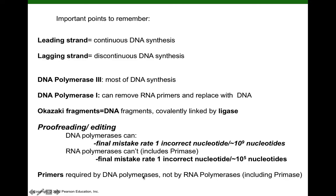I was reading in a biochem book that proofreading, editing, and the requirement for a primer are linked properties. Because DNA polymerase proofreads, it has to have a nucleotide on the new strand to check to make sure the base pairing is correct — that's why it has to have a little RNA primer. It can't just start DNA synthesis without checking to make sure the last nucleotide binding to the template strand carries the correct nitrogenous bases and the correct number of hydrogen bonds are formed with no buckling of the DNA.